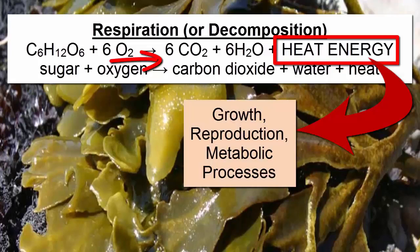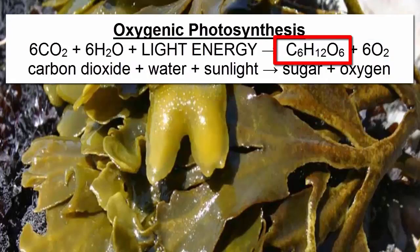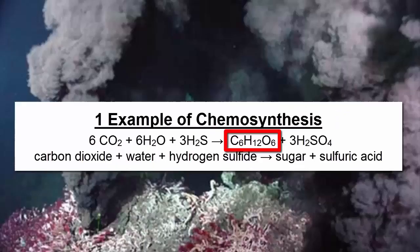Whether an organism makes its own sugar or gets its sugar by ingesting other organisms, it still must perform respiration to access the stored energy. Although photosynthesis is by far the most common form of sugar synthesis on Earth today, another process where light is absent is called chemosynthesis.